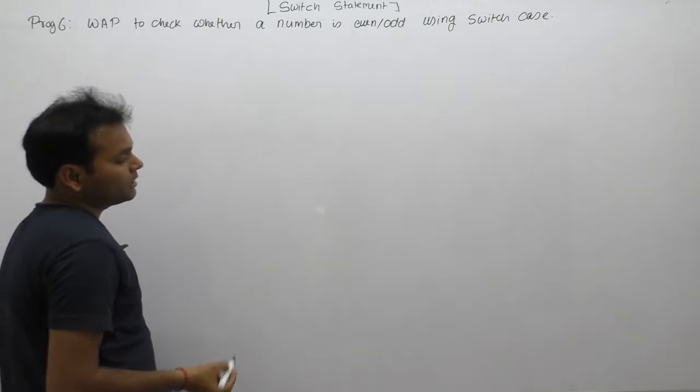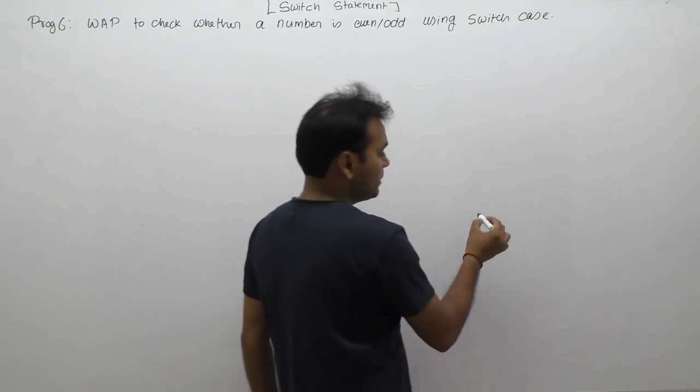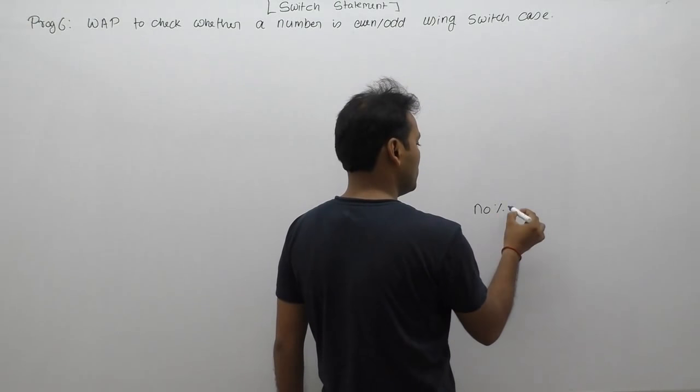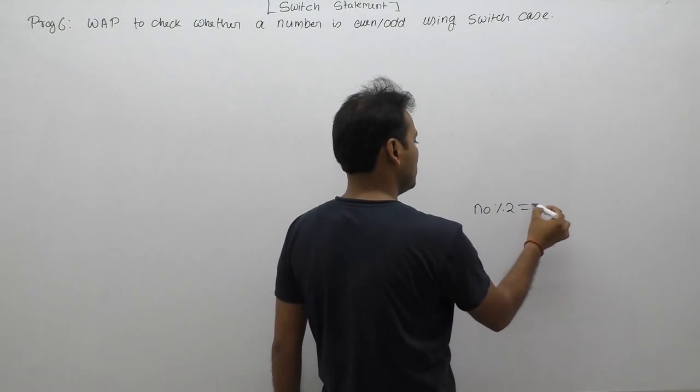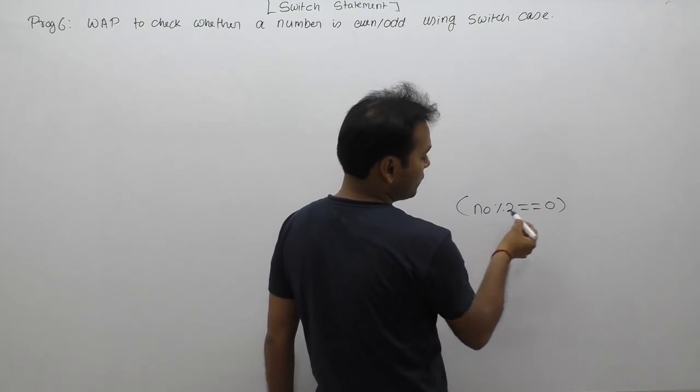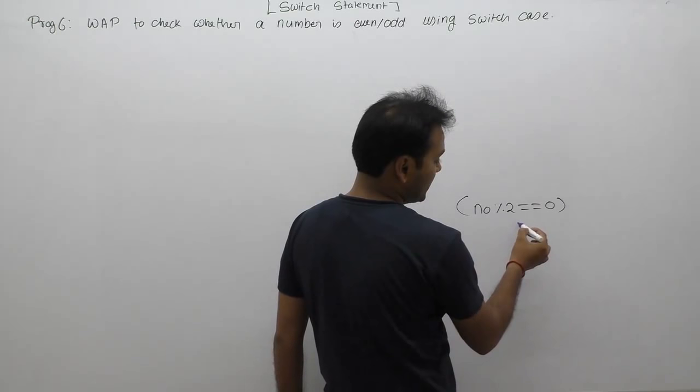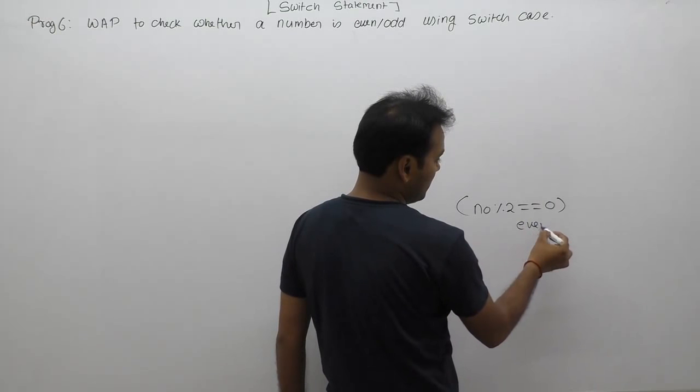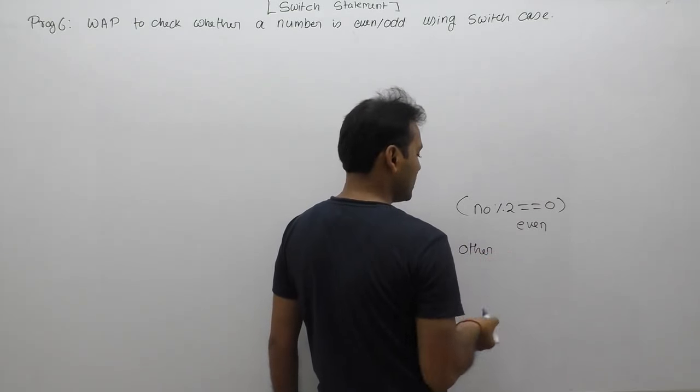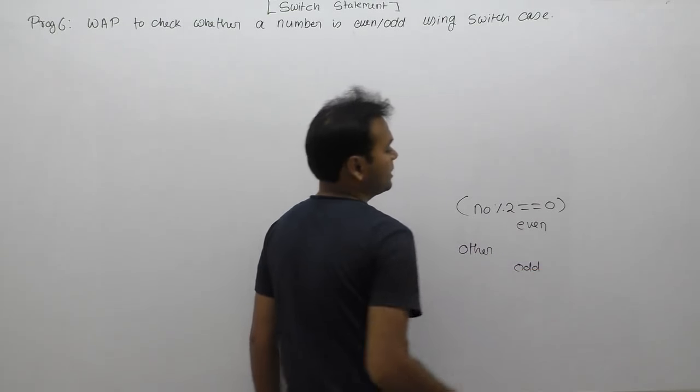As already discussed, if the number is divisible by two, or number modulo two equals zero, it means the given number is a multiple of two, then we display that the number is even. Otherwise, the number is odd.